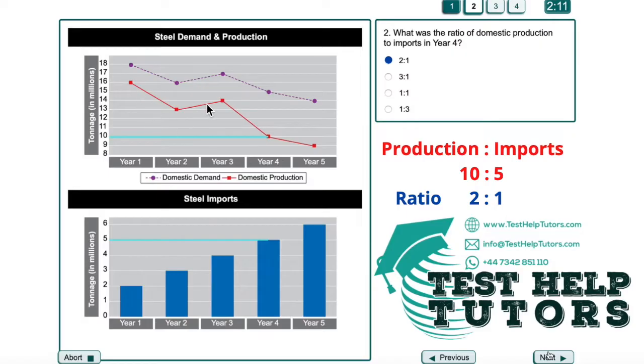Here we can see the domestic production curve and we can see that the production was 10 million in year 4. And for imports, we can see that it was at 5 million in year 4. So production was 10 million, imports was 5 million.